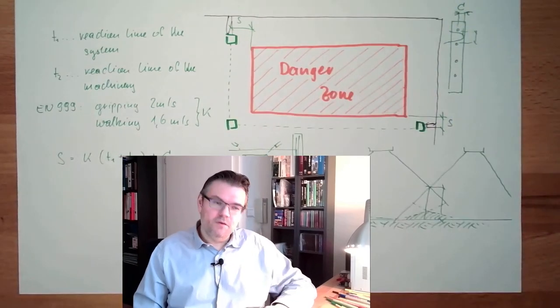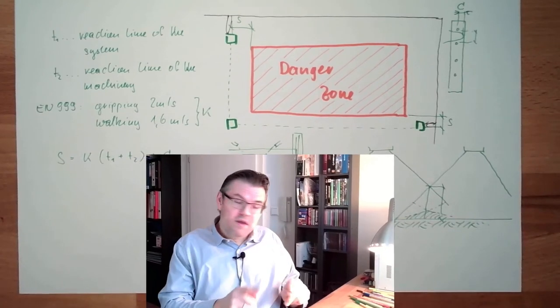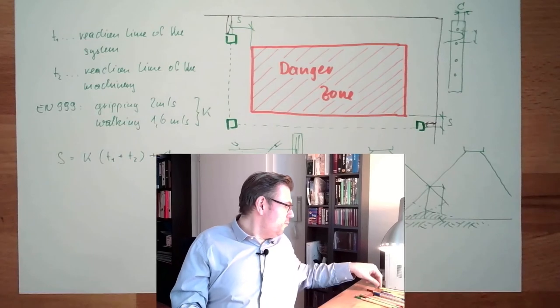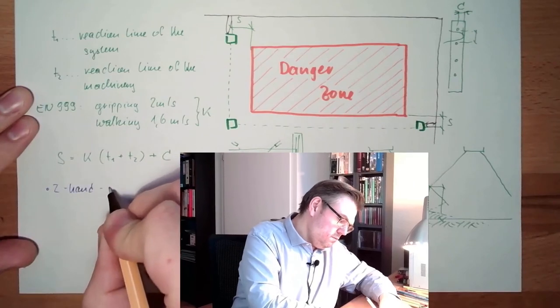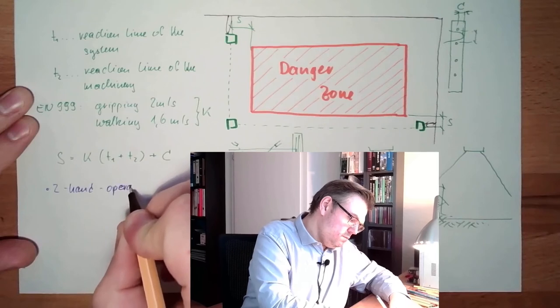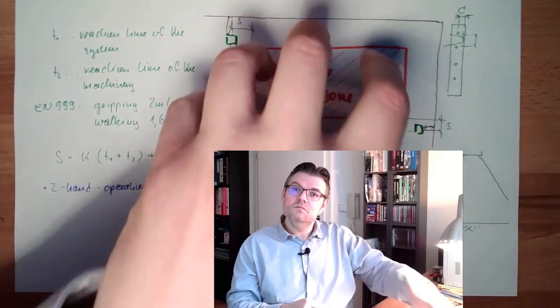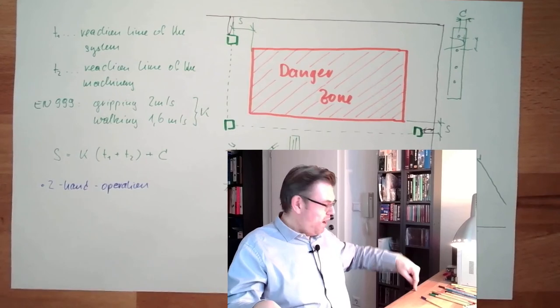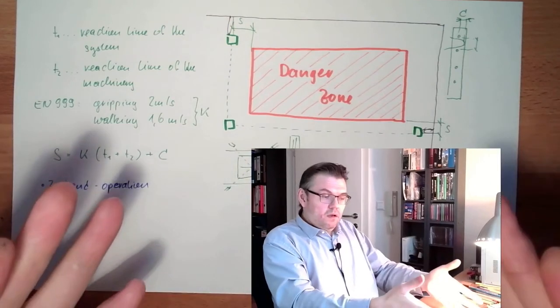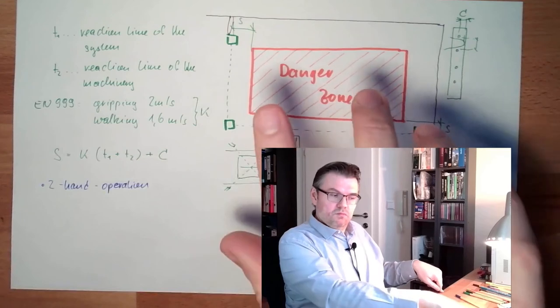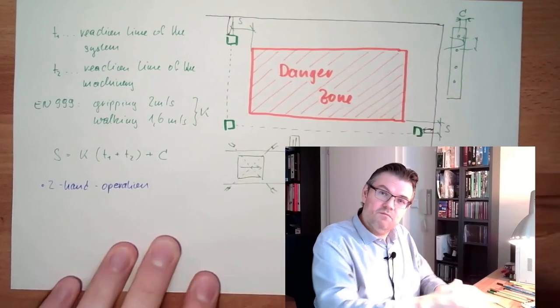Usual things which are used here - one of the simple things on how to get away from the danger zone is a two-hand operation. This is very regular. You put in something in the area. Then you have pressed two buttons left and right. And then it's processed. And once you leave one button, it stops processing, because then you have the danger to grip in. Two-hand operation - quite easy. There is nothing like fencing and so on.